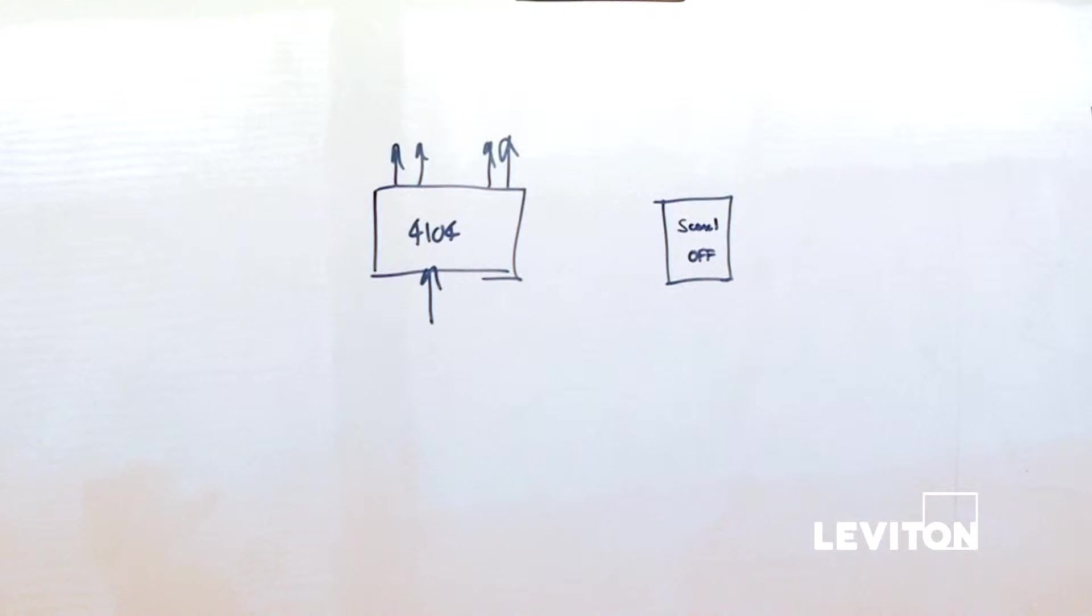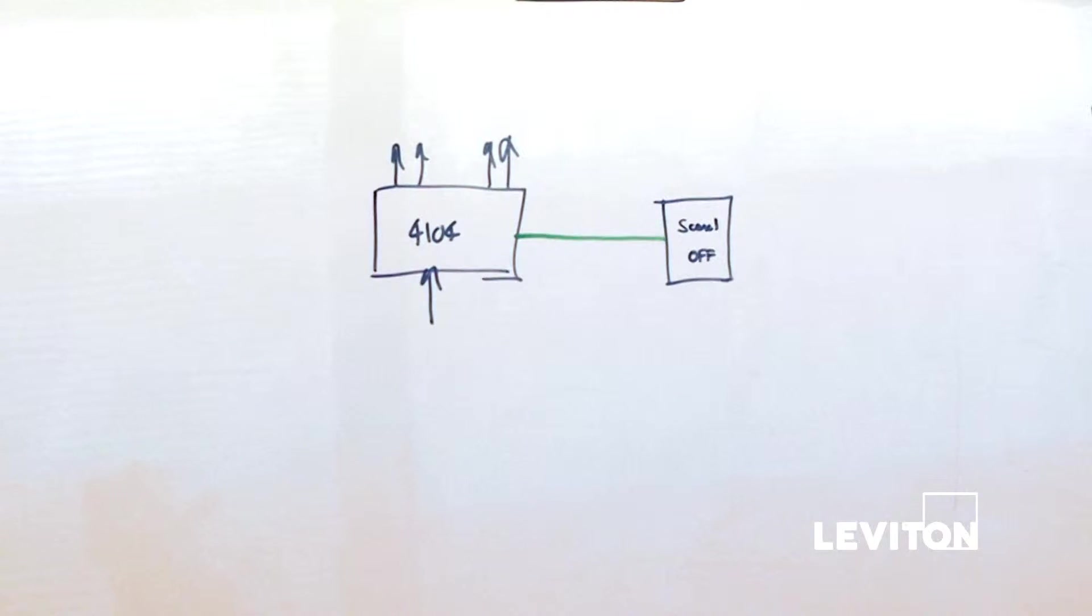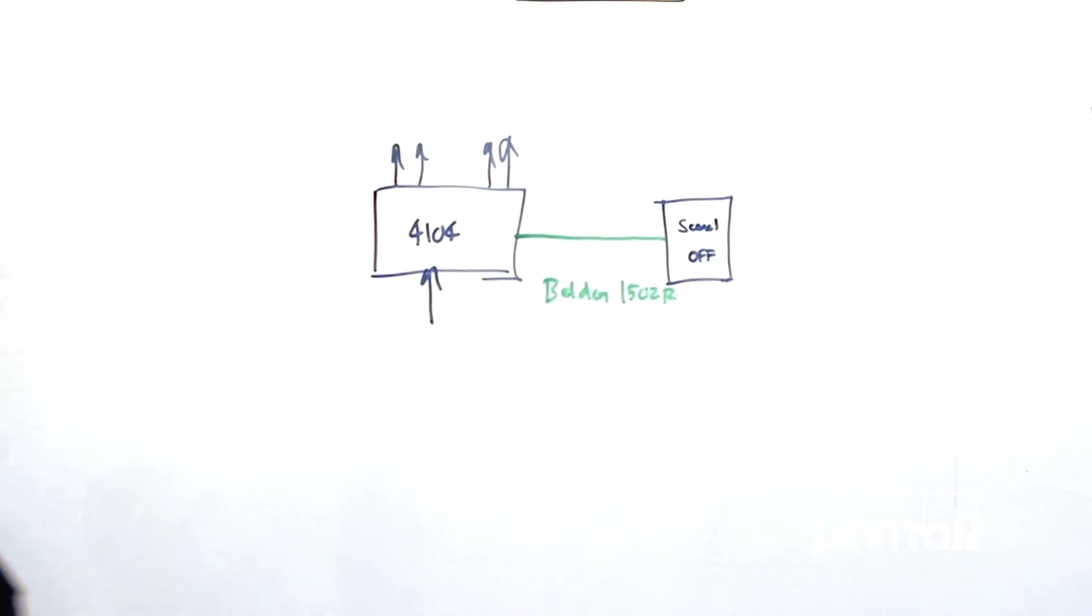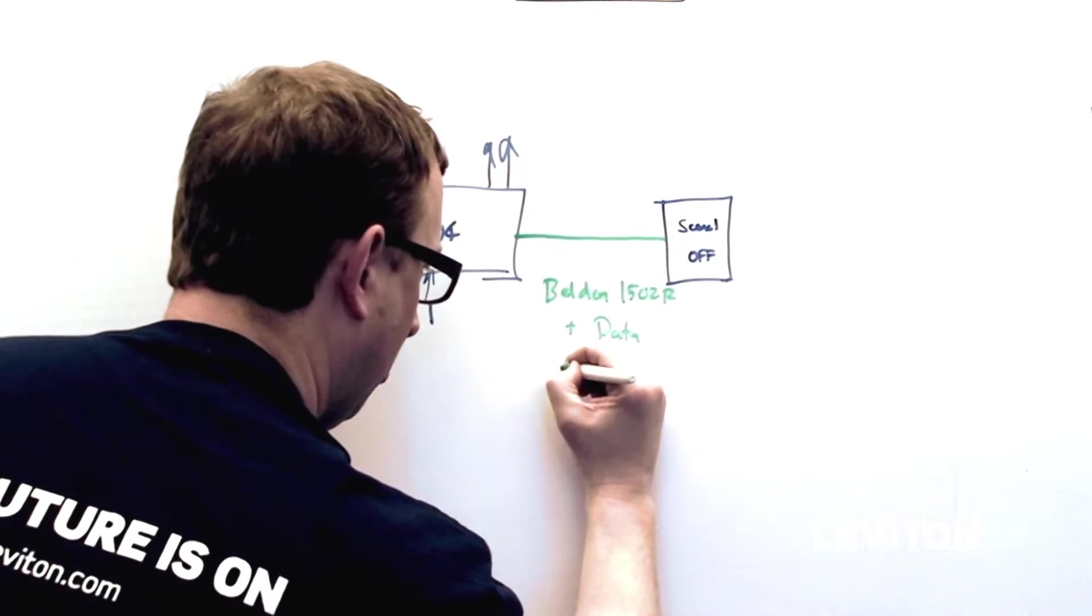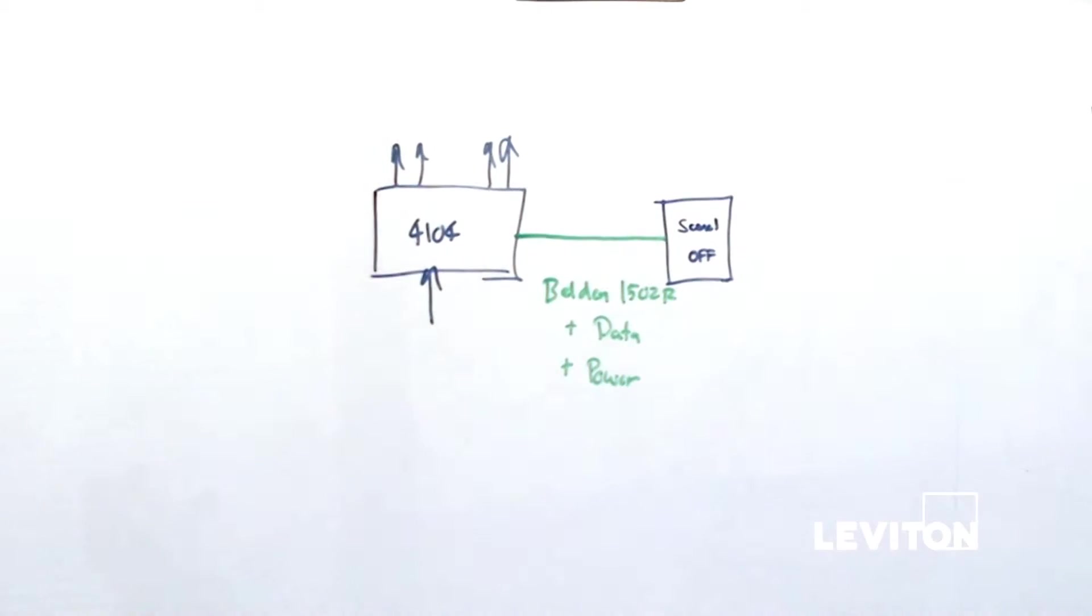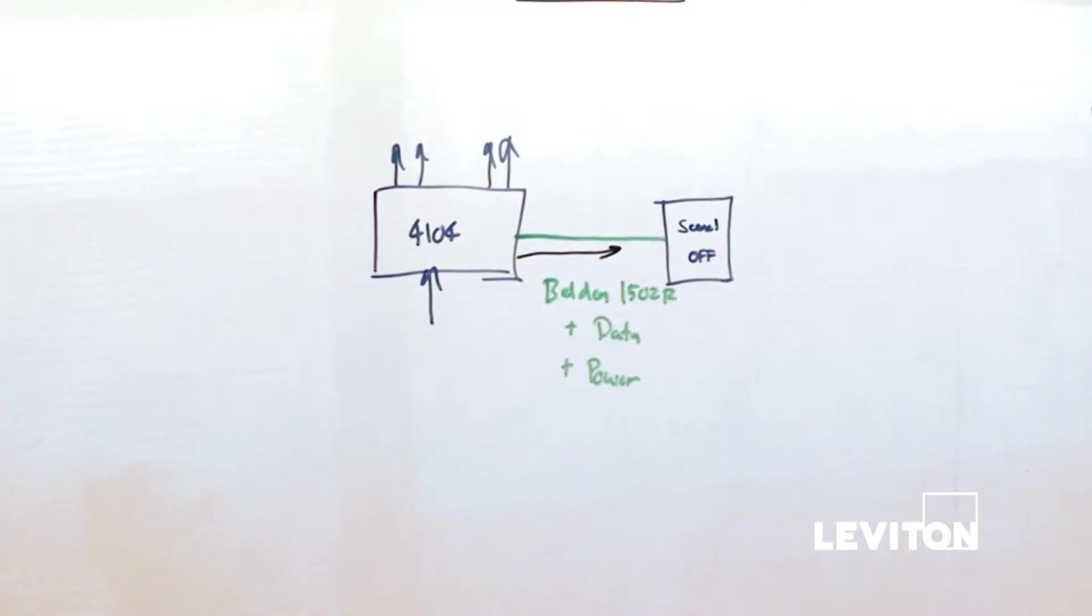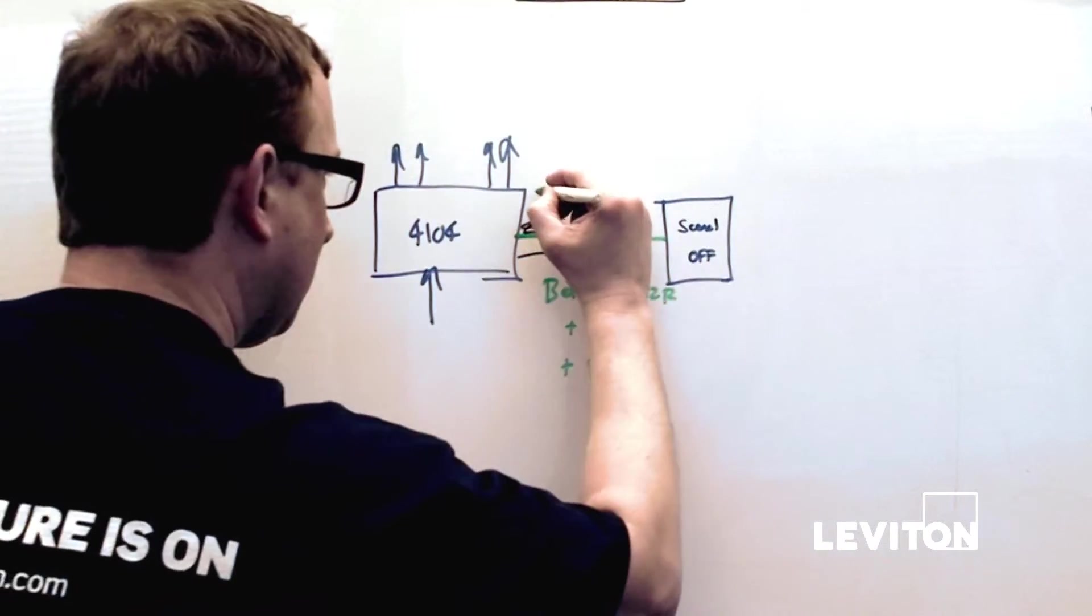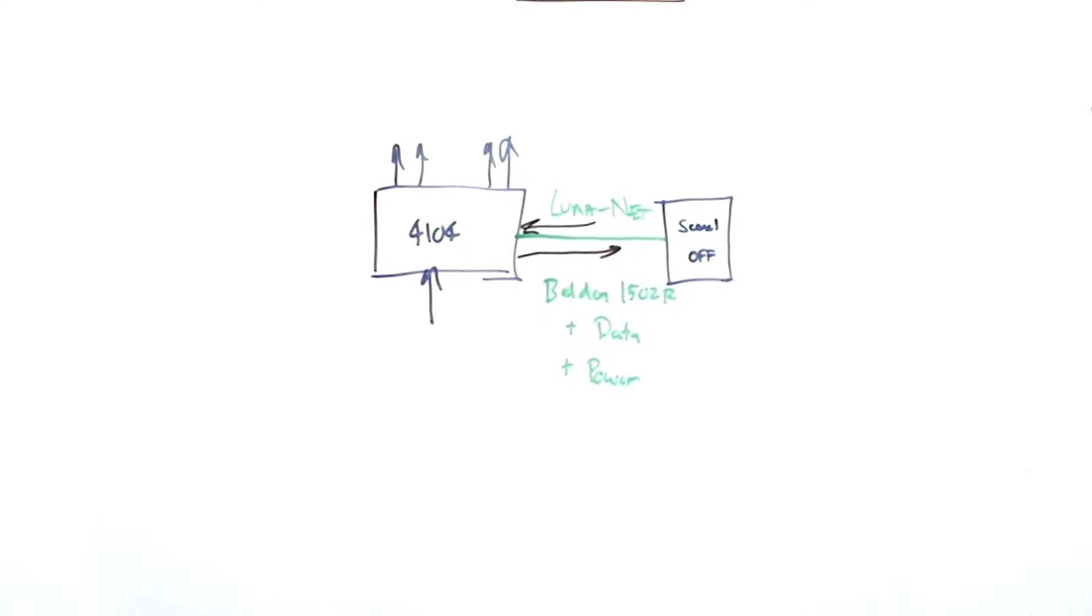That device does not have any power going to it directly, but if we run that Luminet cable in between it. One of our preferred cables to run is Belden 1502R. One of the things we like about 1502R is it has one pair for data and one pair for power. So what's really happening on this system is we've got power that's coming from the 4104 and powering the station and data that's coming back on it. We call that data Luminet, which is why we call that Luminet power.